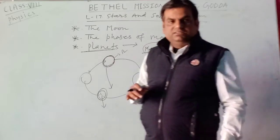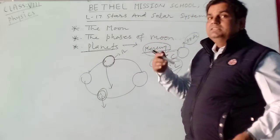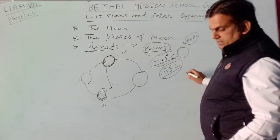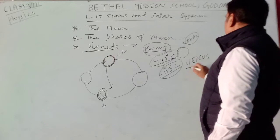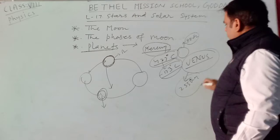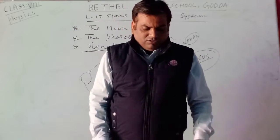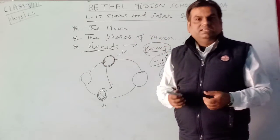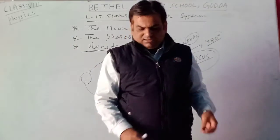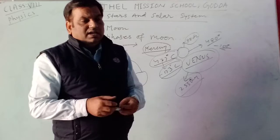The next planet is Venus — its other name is Shukra. It is the second planet and is seen shining in the sky. Venus completes its rotation in 255 days around the sun. There is no evidence of life on the surface of Venus. During the day, temperature is very high — about 480 degrees Celsius — and at night it is very cold, about minus 150 degrees Celsius.